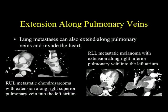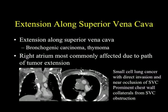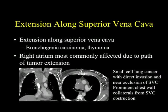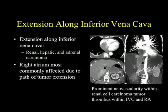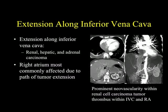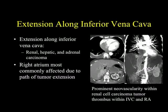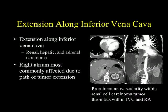We can also see extension along the SVC — we think about lung cancer and thymoma in that scenario, and of course the right atrium is most commonly affected. Here's a nice example of right atrium involvement with tumor extension. Thymoma is one of the classic things to consider. In this case of small cell carcinoma, we look for SVC obstruction, which this patient has — you can see the collaterals in the chest wall. SVC obstruction and tumor extension are very nicely seen together.